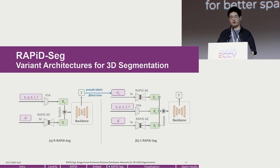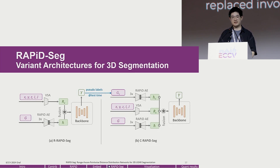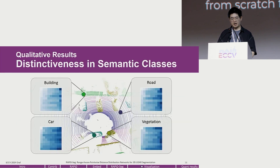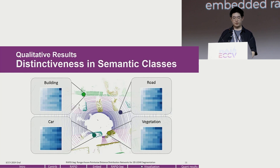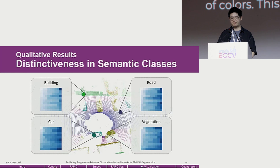We then propose two novel and effective variants of RAPID-seq for quicker and better performance. R-RAPID-seq involves autoencoder training from scratch, followed by C-RAPID on the right-hand side. Our qualitative results show the distinctiveness in different semantic classes of R-RAPID features, as visualized by the four rectangles shown here. The embedded R-RAPID features corresponding to different points are visualized using a spectrum of colors, showcasing our capacity to represent different classes.